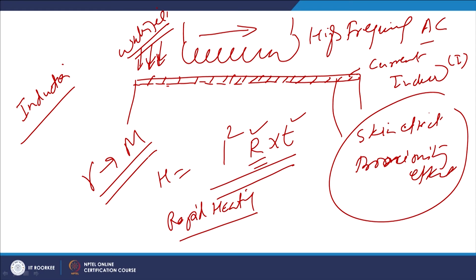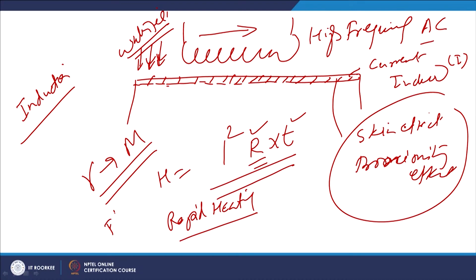Just like flame hardening, in induction hardening, the medium carbon, high carbon, or alloy steel being subjected to induction heating undergoes surface layer heating, causing transformation of ferrite and pearlite into austenite. Once austenite is formed to the required depth, rapid cooling using a water jet transforms the austenite into martensite, causing the required improvement in hardness.